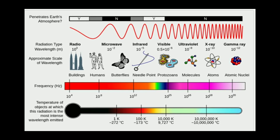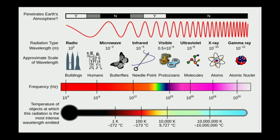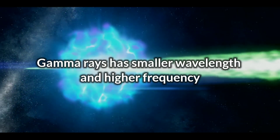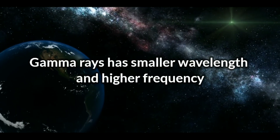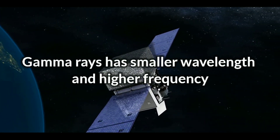Gamma rays have a very low wavelength. They have a frequency of 10²⁰ Hz, and it has a very high frequency. So gamma rays have a very high frequency.